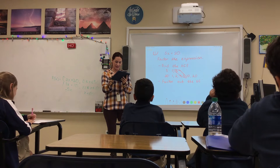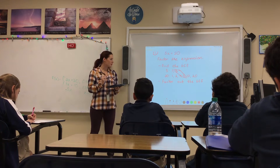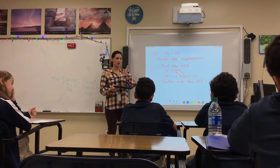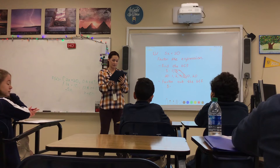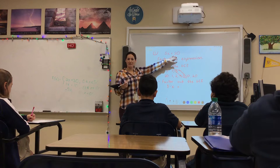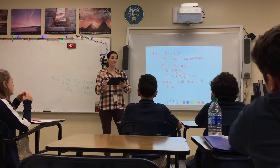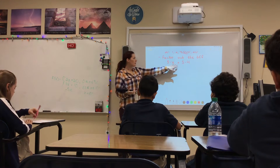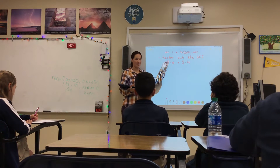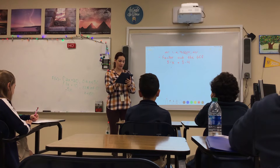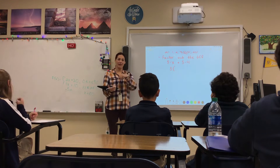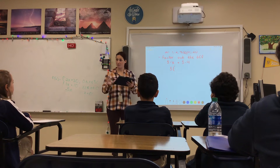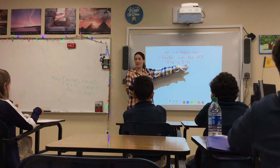Factor out the GCF. So I first write each of these with a 5 kind of separated from it. So instead of 5x, it's going to be 5 times x, plus — and how do I write 20 as 5 times something? 5 times 4. Now each of them you can clearly see has a 5 in it. So I'm going to take that 5 and pull it out. In the parentheses is what remains after I take out the 5. What would be left from the first term? Just x. And from the 20, which is 5 times 4, taking out the 5 leaves just 4.